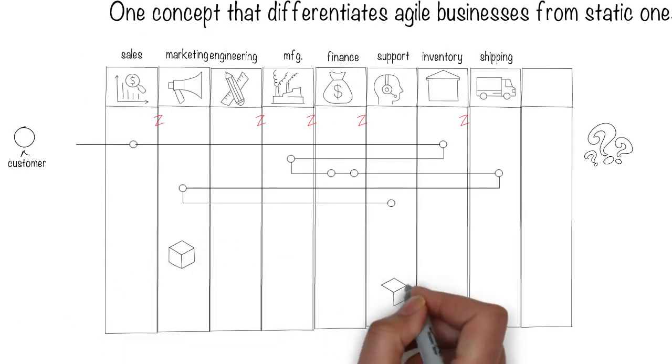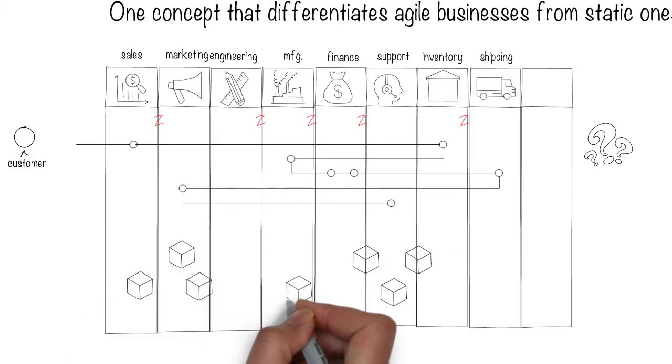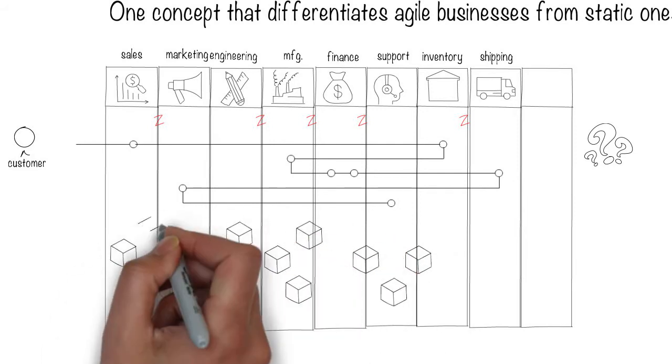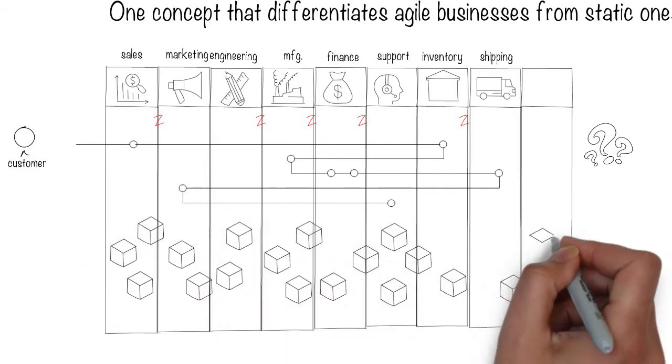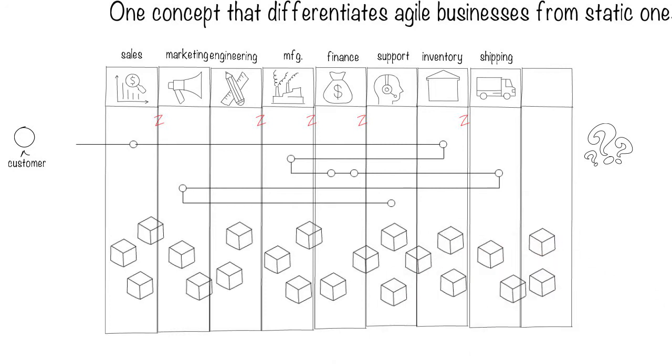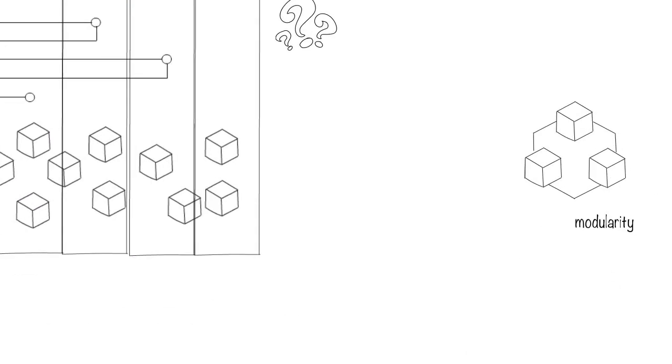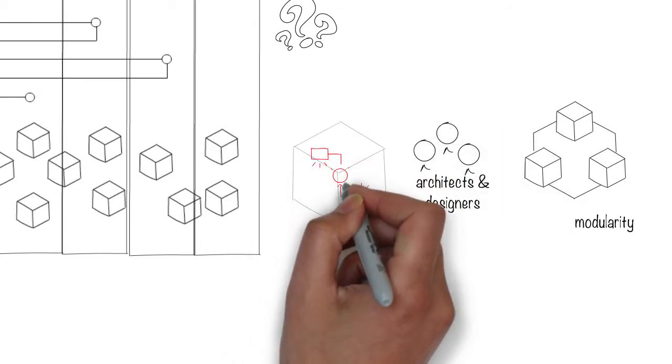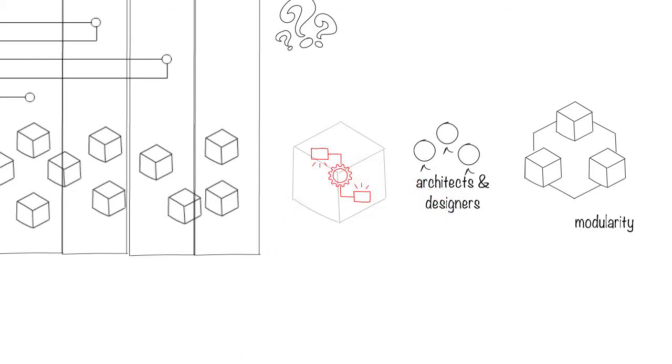Modularity is about partitioning the business into smaller parts. Modules can be invoked in different sequences to provide personalized customer experiences. Only the architects and designers of each module need to know how that particular module works—a concept called abstraction. The functions of the module are exposed as interfaces which can be invoked in many sequences.